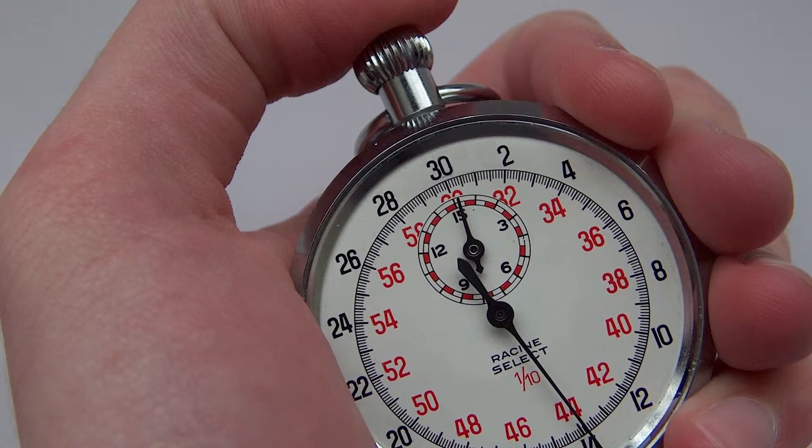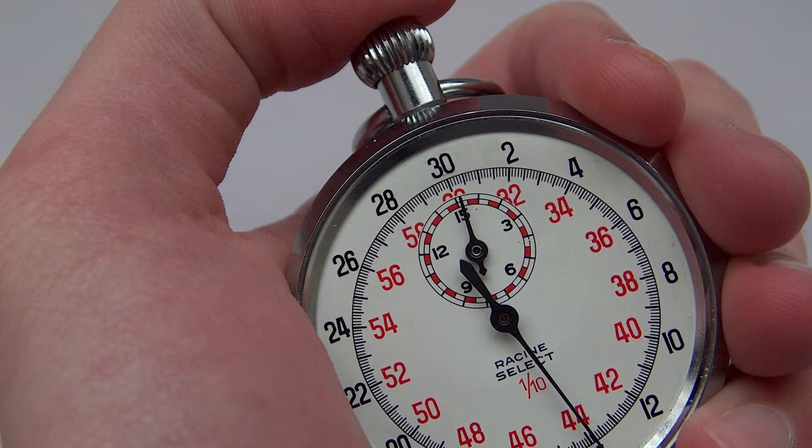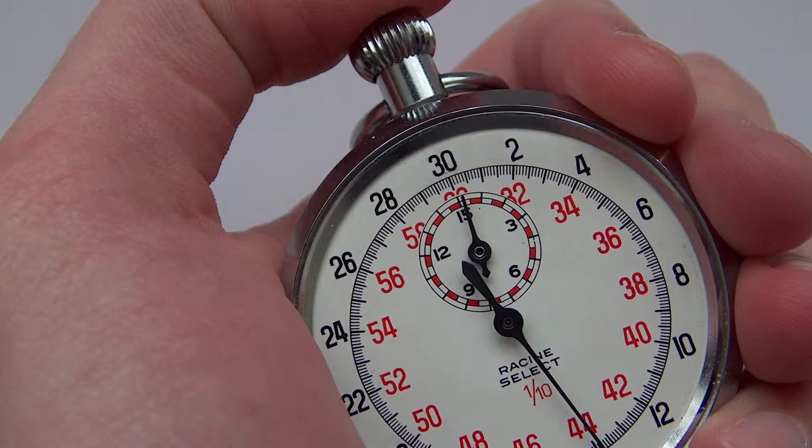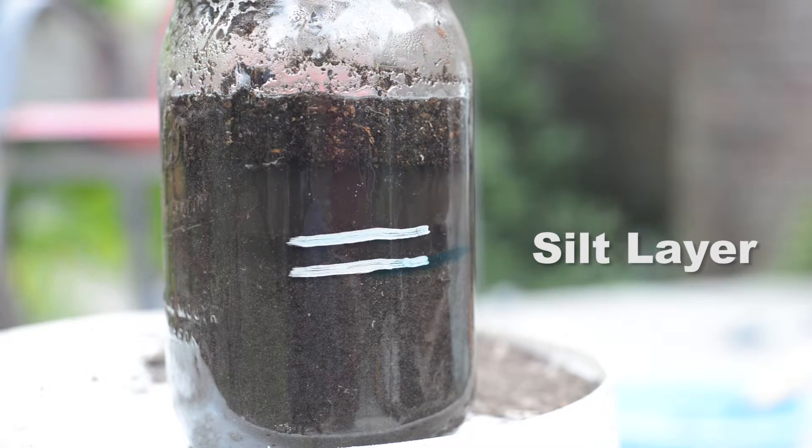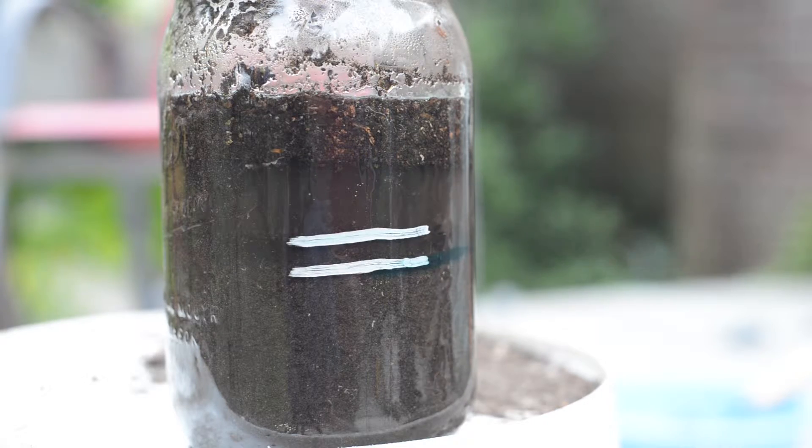Leave the jar sitting in a level spot and set a timer for two hours. After two hours, mark the next settled layer. This is the silt component of your soil.